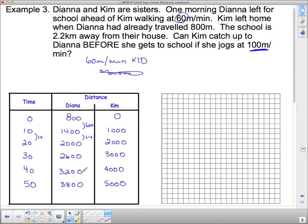Now we have to know that after about here, this really doesn't make any sense because they've gone way past the school. The school is 2.2 kilometers away. And 2.2 kilometers is 2200 meters. So these are way past the school. Now I'm going to put them on the graph.